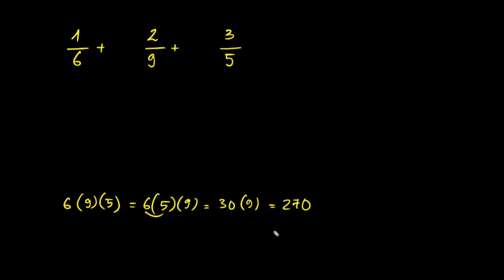270 is a common denominator. It may not be the least common denominator, but nevertheless, we can still work with it. So, I'm going to use the same technique as I did before.